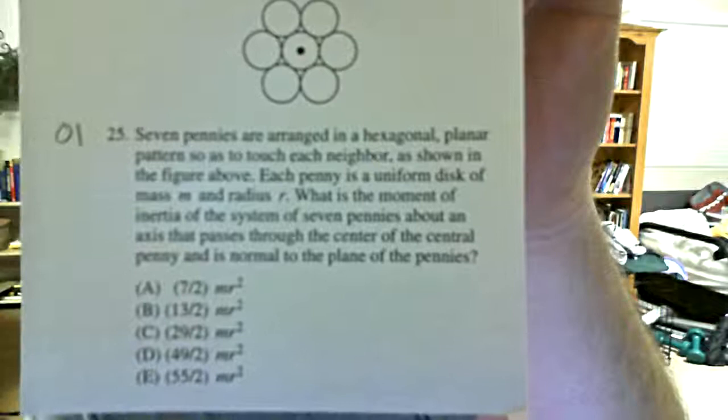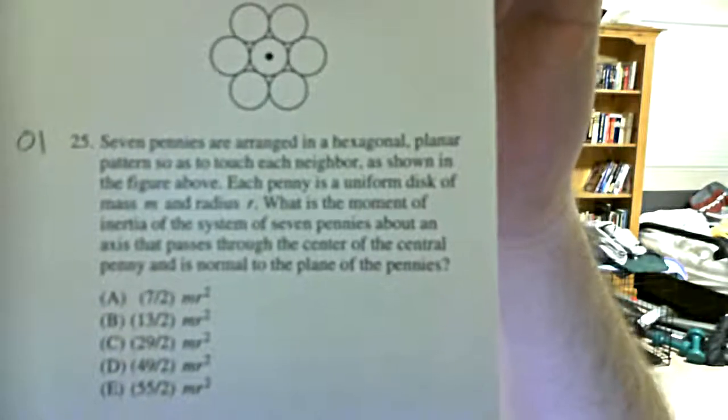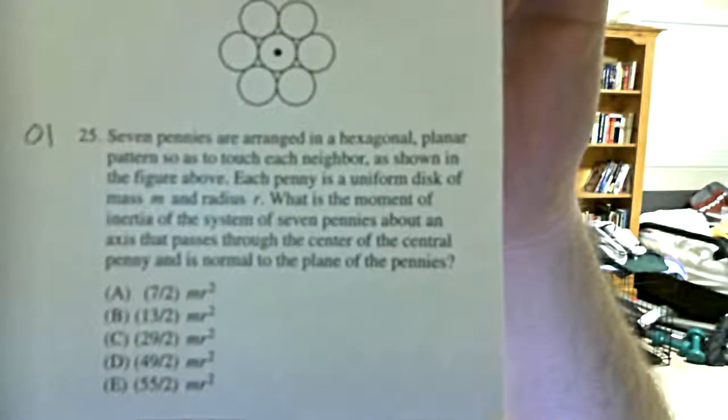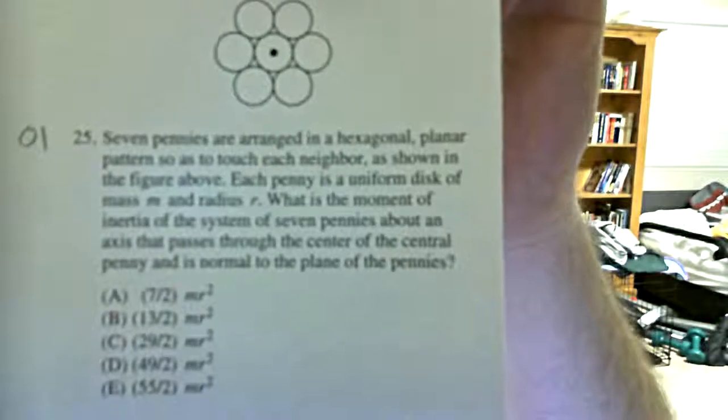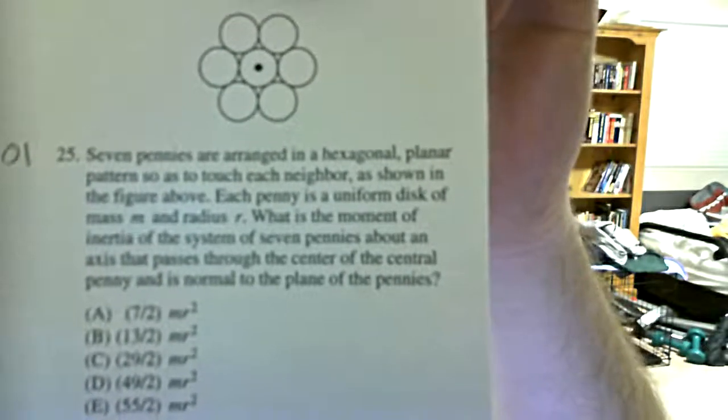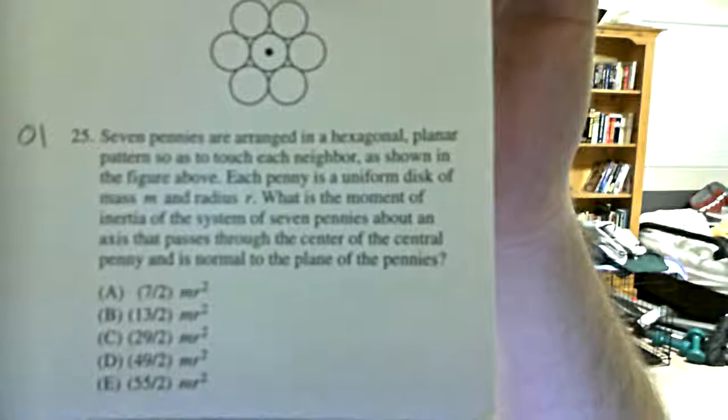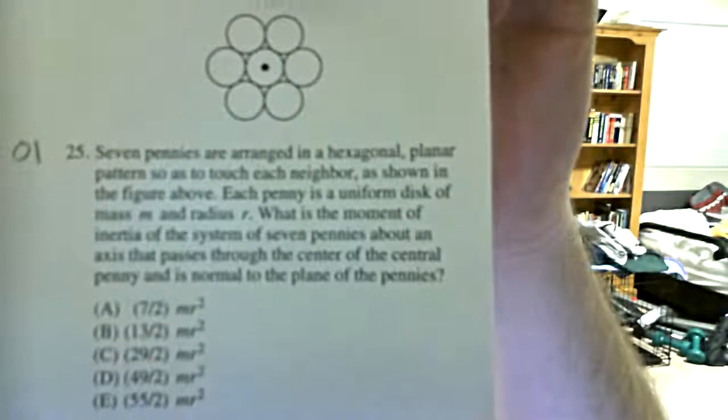Number 25. Seven pennies are arranged in a hexagonal planar pattern so as to touch each neighbor, as shown in the figure above. Each penny is a uniform disk of mass M and radius R. What is the moment of inertia of the system of seven pennies about an axis that passes through the center of the central penny and is normal to the plane of the pennies?